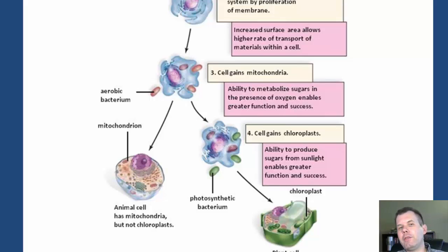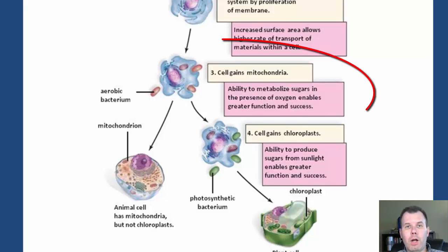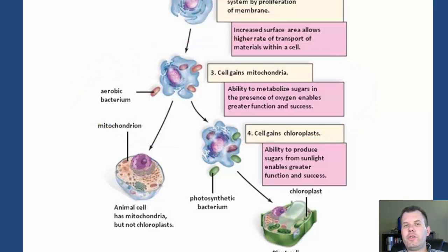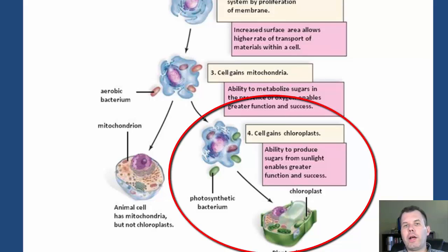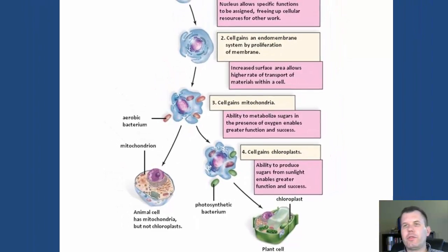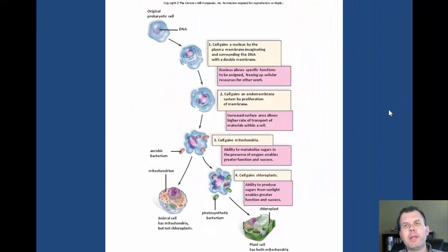Oxygen is toxic to those anaerobic bacteria, and in order to survive, they needed new mechanisms to deal with oxygen. What they think happened is that large anaerobic bacteria started swallowing up little aerobic bacteria, which became symbionts of the cell — what we now know as mitochondria, which use oxygen to make energy, and also chloroplasts, responsible for photosynthesis. That's the basic idea behind endosymbiosis.